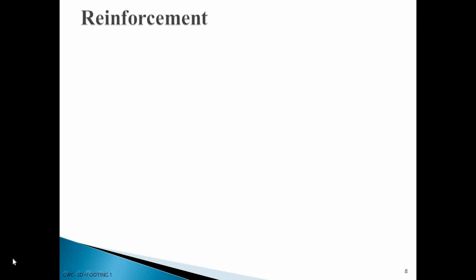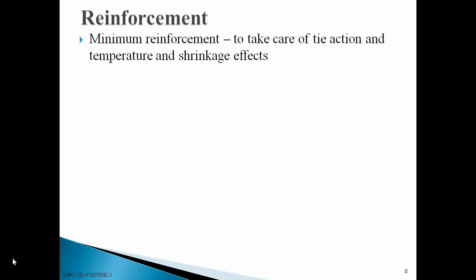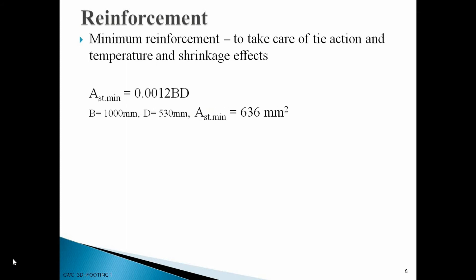In a plain concrete footing, force transfer takes place without reinforcement and by strut action. The imaginary struts are inclined to the vertical, and the horizontal component of this causes tie action. In order to take care of this tie action and to provide adequate resistance against temperature and shrinkage effects, we need to provide a minimum reinforcement. The minimum area of reinforcement is calculated as 0.12% of B×d, giving 636 mm².